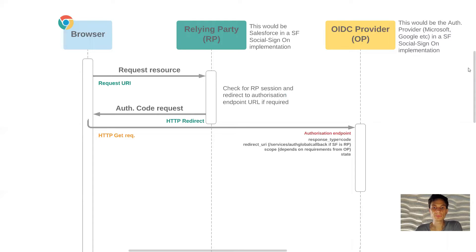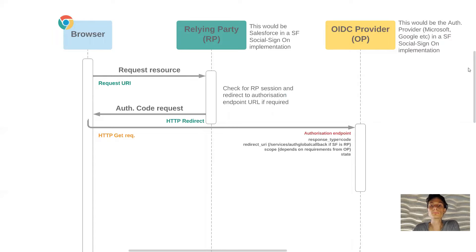This is the web server flavor of OAuth, so there are a lot of similarities with that flow - it's worth taking a look at the summary for the web server flow as well. The response_type attribute is set to 'code' as it would be for any web server flow. The redirect URI, if Salesforce is acting as the relying party, would be the auth global callback URL. The scope includes an 'openid' scope, which is generally required by an OpenID Connect provider, though some providers also require other scopes.